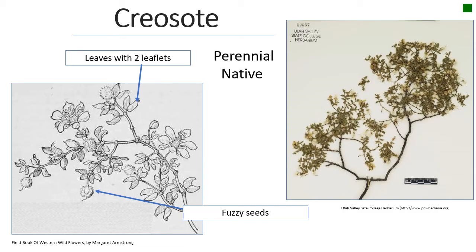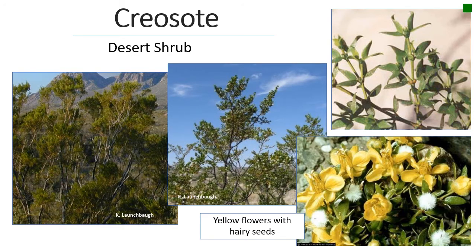Creosote bush is something I've mentioned as being in the understory of most deserts — especially the Mojave. It's relatively easy to recognize because each leaf has two leaflets connected at the base, forming kind of horns. The stem looks like rope with knots where new leaves emerged. The seeds are fuzzy, which is also a unique characteristic. The flowers are quite pretty — yellow — and then the seeds form a hairy, fuzzy white or yellow structure. Those horn-like leaves, two leaflets held together at the base, are a very distinctive feature.